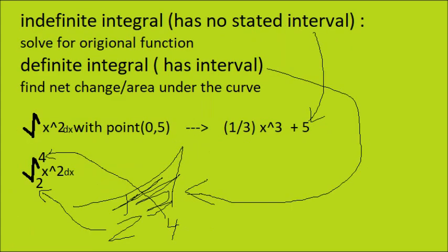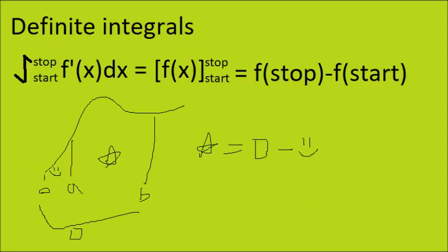In indefinite integrals, you're trying to get the original function, usually. In definite integrals, you're trying to find the net change on the interval, or the area under the curve on a certain interval. Definite integrals are super easy. You just evaluate the integral, and then you subtract the stop from the start point. Look at the formula handout, 7 through 20. The more important ones go first.